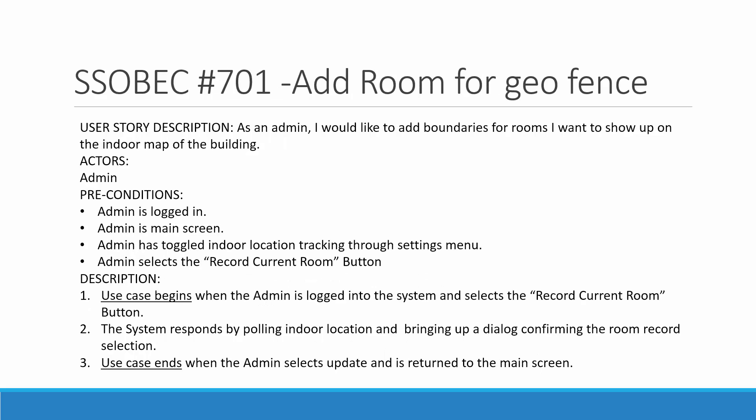Another important user story is the ability to add a room to the SQL database for geofencing. Now that we have indoor localization, we needed a way to tell if a room is occupied or not. The solution is geofencing: we make a polygon and overlay it on top of the map. If a user is inside the polygon, that room is occupied; if they're outside, the room isn't occupied.